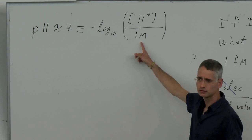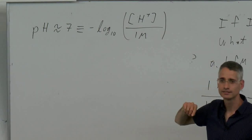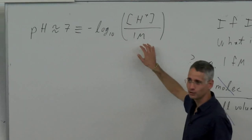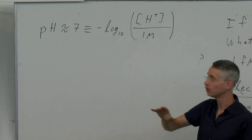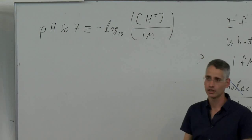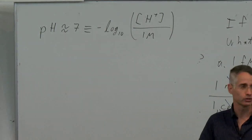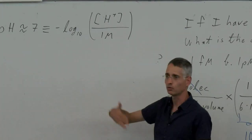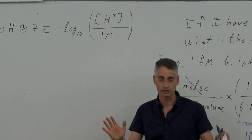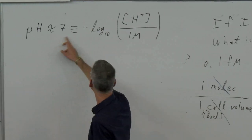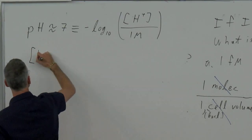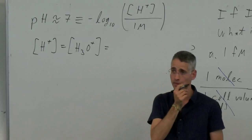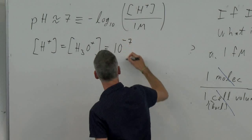The pH is about 7. The pH is defined as minus log base 10 of the concentration of H+ — or H3O+ — divided by 1 molar. Why divide by 1 molar? So you don't take a log of something with units. Since pH is 7, the concentration of H+ is 10 to the minus 7 molar — or equivalently, 100 nanomolar.